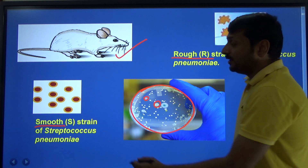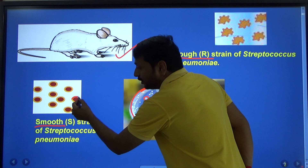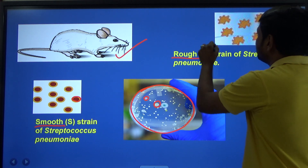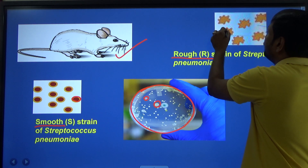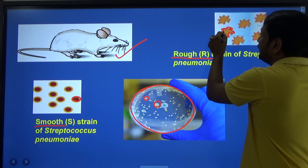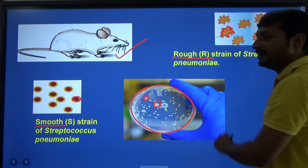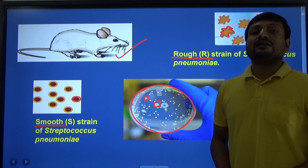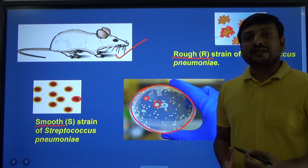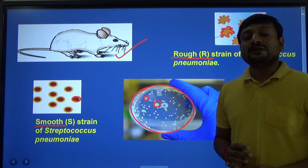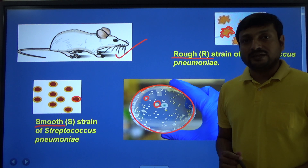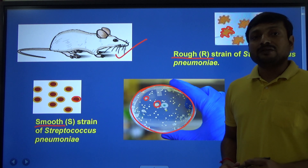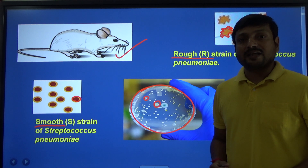The Streptococcus pneumoniae which is surrounded by a polysaccharide coat will always produce smooth colonies, and the Streptococcus pneumoniae which is devoid of any polysaccharide coat will produce rough colonies. So rough colonies are produced by bacteria without a polysaccharide coat, and smooth colonies are produced by bacteria with the polysaccharide coat around them — we also call it a capsule.